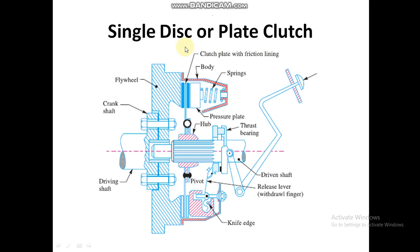This is the diagram for the single disc or plate clutch. We have a driving shaft connected to the engine, then a flywheel rotating with the driving shaft, then a pressure plate or clutch plate. There is also a pressure plate body, springs, a driven shaft hub in the center, and a lever to press the pedal. Whenever we press the pedal, the springs contract and the clutch is disengaged.